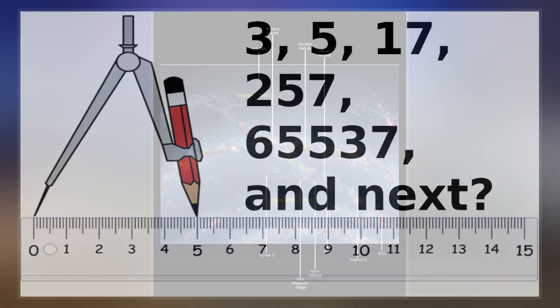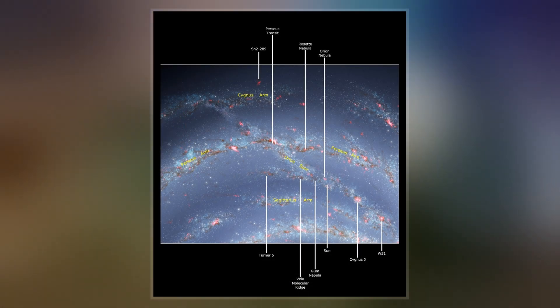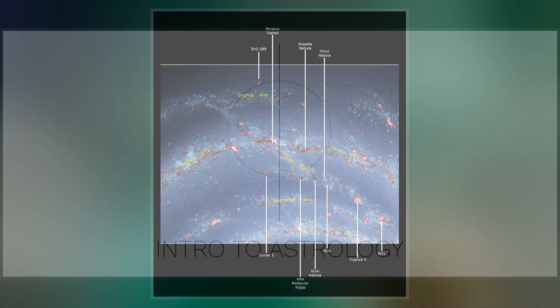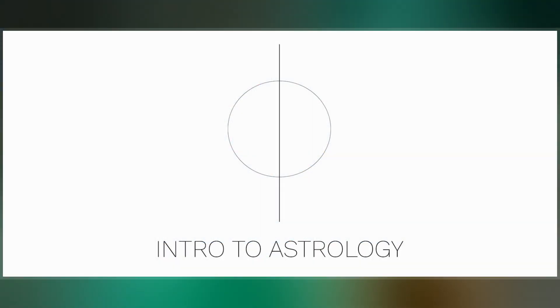A whole regular 65,537-gon is not visually discernible from a circle, and its perimeter differs from that of the circumscribed circle by about 15 parts per billion.